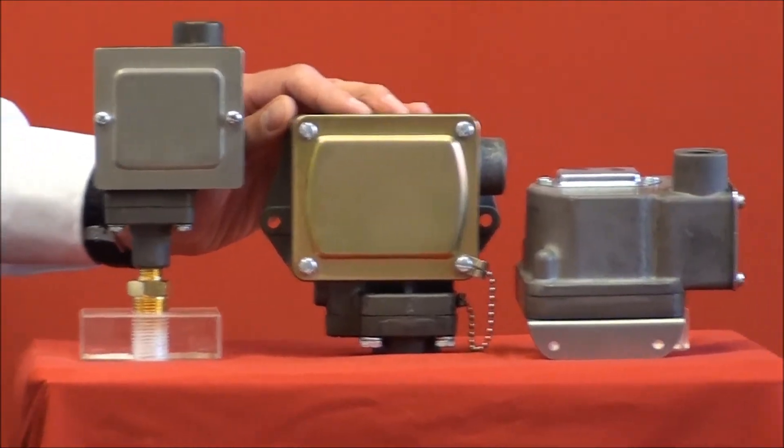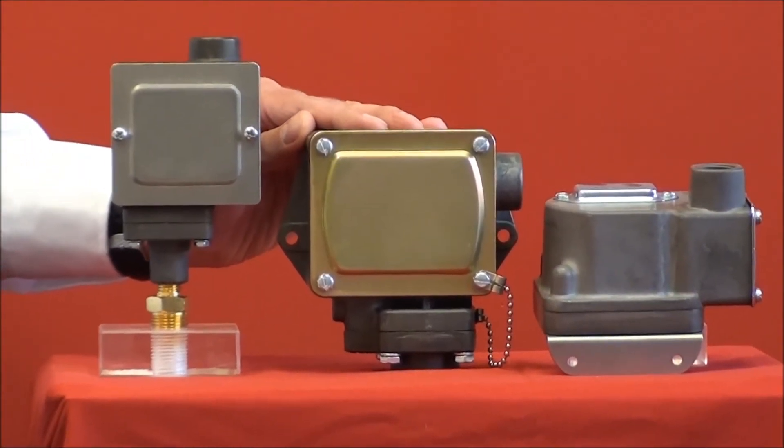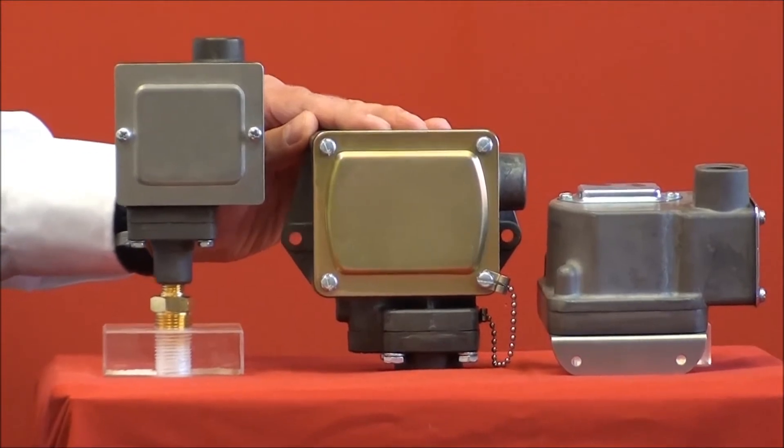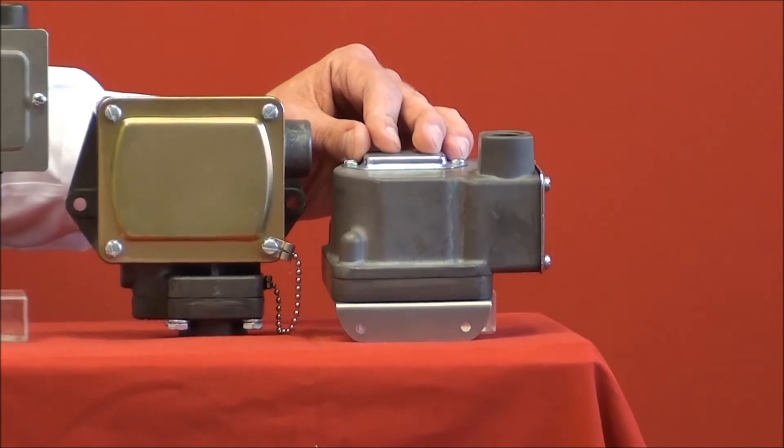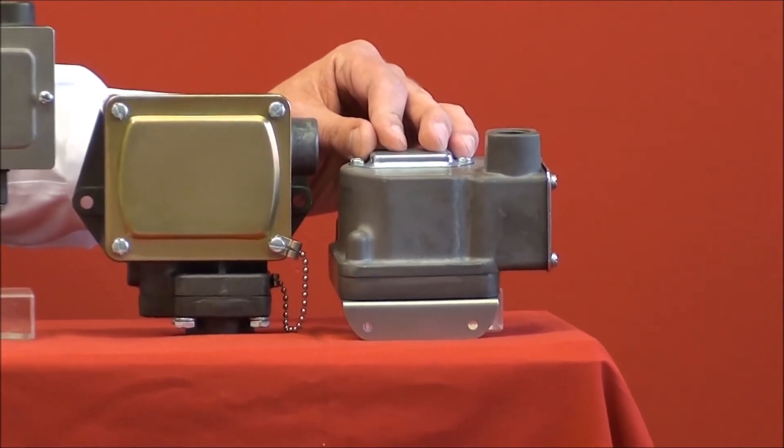Then we have the 3 WPS for pressure ranges from 30 to 1600 psi. While the 4 WPS covers the lower pressures from inches of water column up to 150 psi.